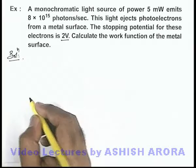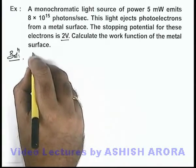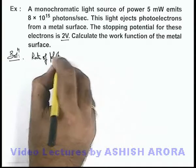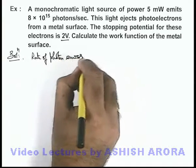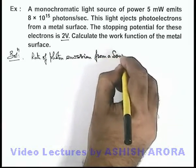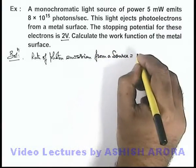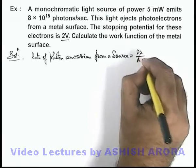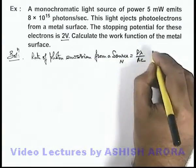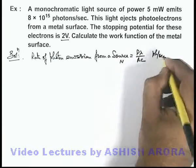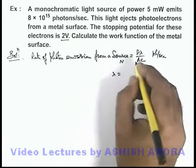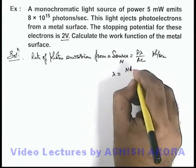In this situation we can directly write the rate of photon emission from a source. We know it is given as n = Pλ/hc, where n is the rate in photons per second. From this we can directly get the value of wavelength of light, which can be written as λ = nhc/P.